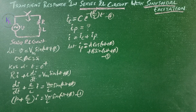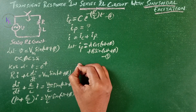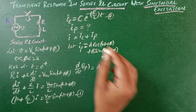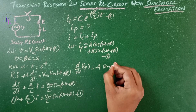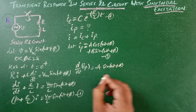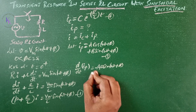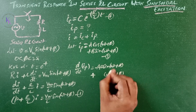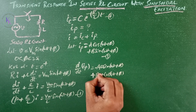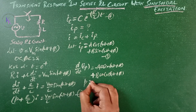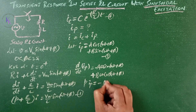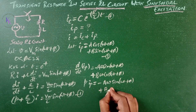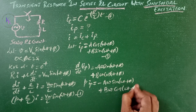The first derivative of Ip gives: d/dt(Ip) = A·d/dt[cos(ωt + φ)] = −A·ω·sin(ωt + φ), plus the derivative of sin is cos, so B·ω·cos(ωt + φ). Therefore P·Ip = −A·ω·sin(ωt + φ) + B·ω·cos(ωt + φ).